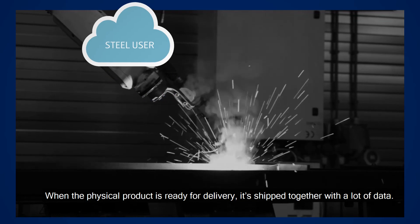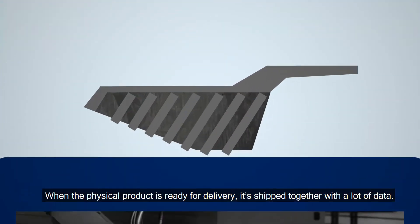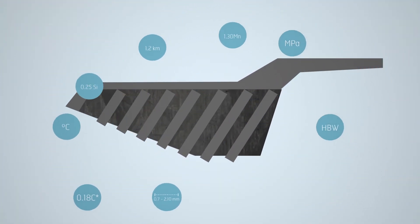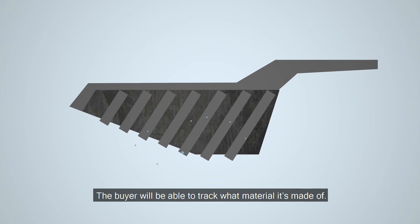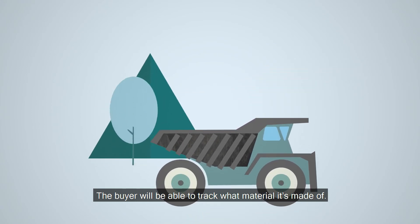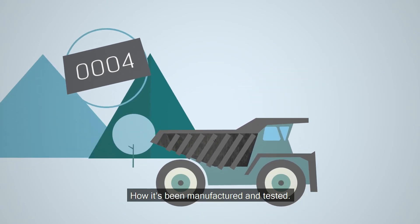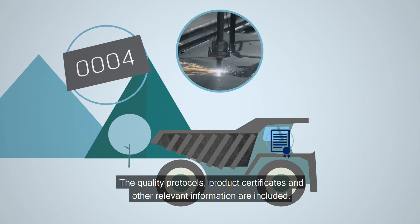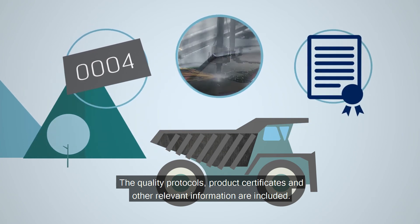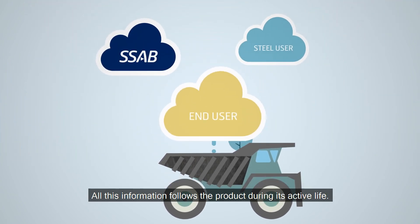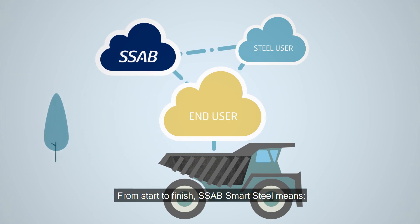When the physical product is ready for delivery, it's shipped together with a lot of data. The buyer will be able to track what material it's made of, how it's been manufactured and tested. The quality protocols, product certificates and other relevant information are included. All this information follows the product during its active life.